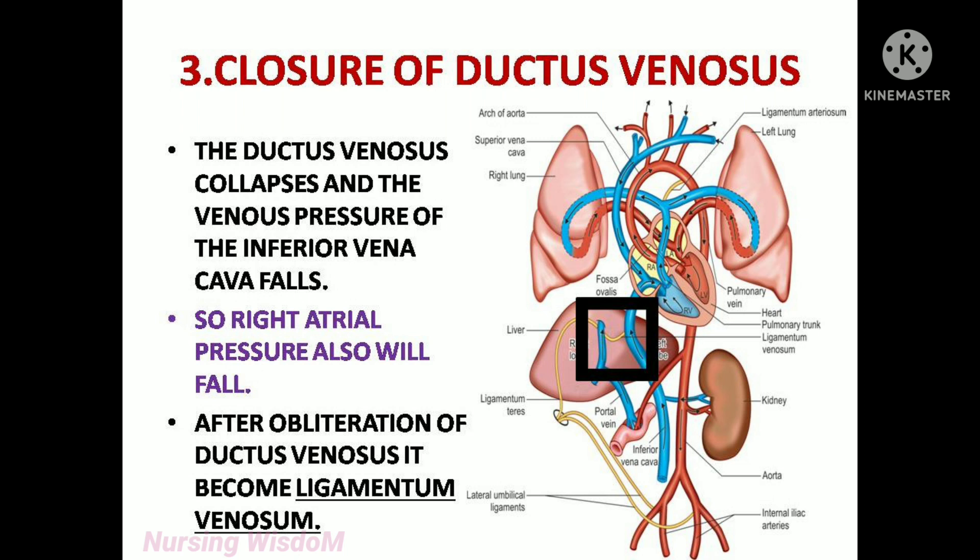The next change is closure of ductus venosus. The ductus venosus collapses and the venous pressure of the inferior vena cava falls, so right atrial pressure also will fall. After obliteration of the ductus venosus, it becomes the ligamentum venosum.